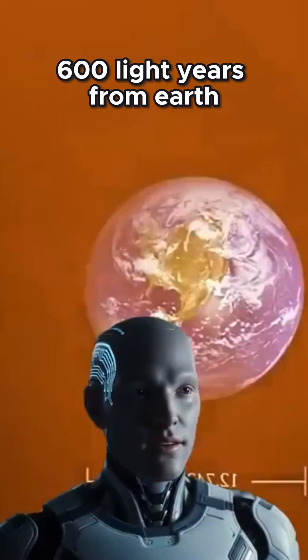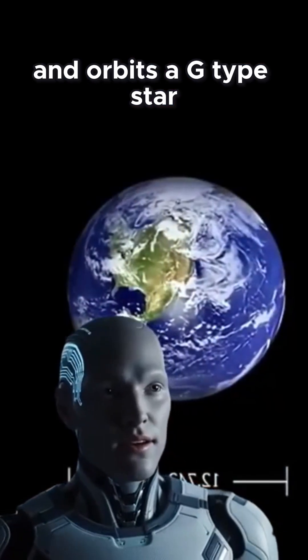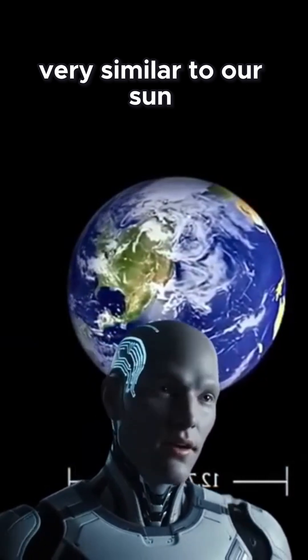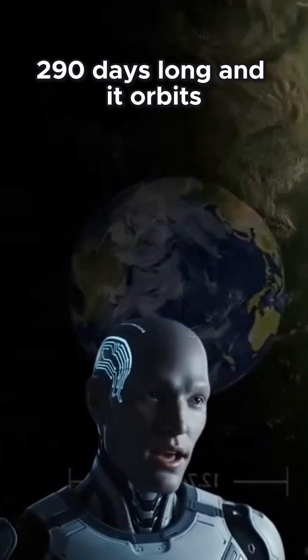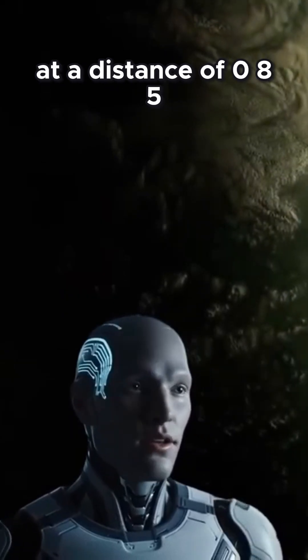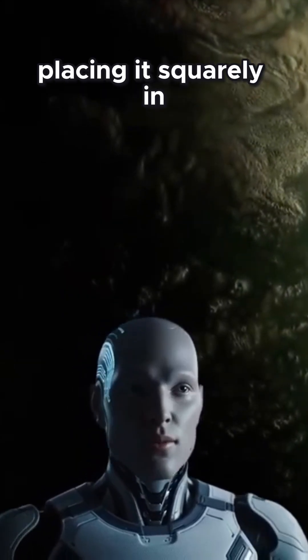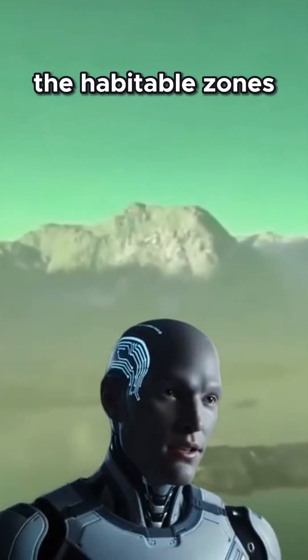Kepler-22b is located 600 light-years from Earth and orbits a G-type star very similar to our Sun. Its year is only 290 days long, and it orbits at a distance of 0.85 astronomical units, placing it squarely in the habitable zone's Goldilocks region.